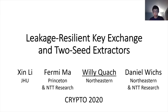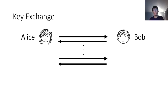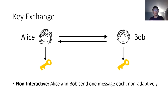Throughout this talk, we'll be interested in key exchange where we have two parties, Alice and Bob, who would like to agree on a shared key. They do not start with such a key, so they'll have to execute some protocol. At the end of a key-exchange protocol, Alice and Bob will be able to agree on some uniform key. We'll be considering non-interactive key exchange, where the messages that Alice and Bob send to each other do not depend on the other party's message.